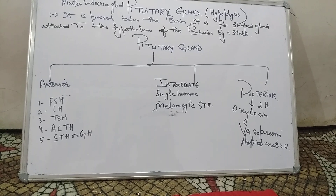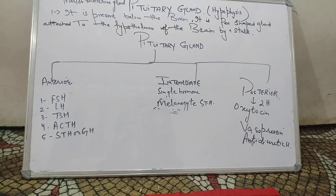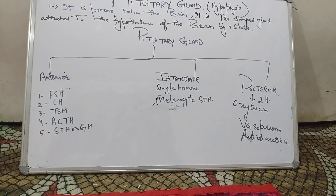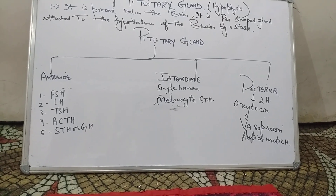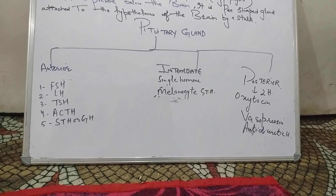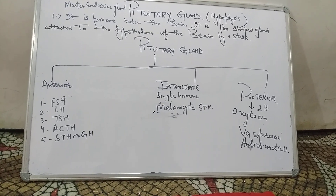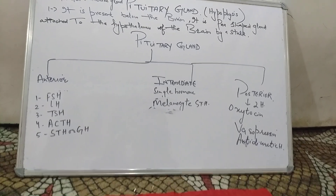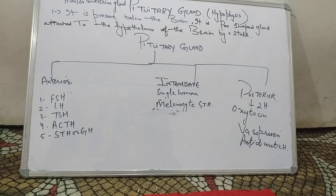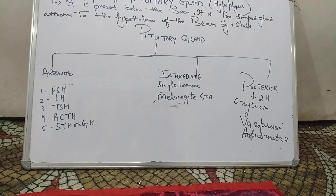The pituitary gland is a pea-shaped gland attached to the hypothalamus of the brain by a stalk. The hypothalamus is part of the forebrain. The pituitary gland has three lobes: anterior, intermediate, and posterior.